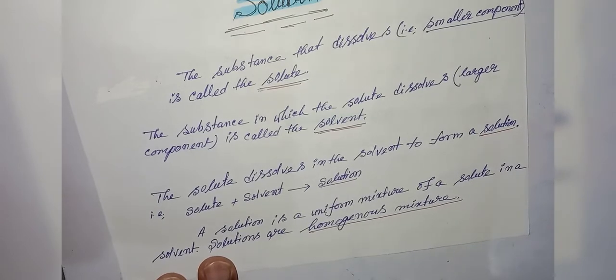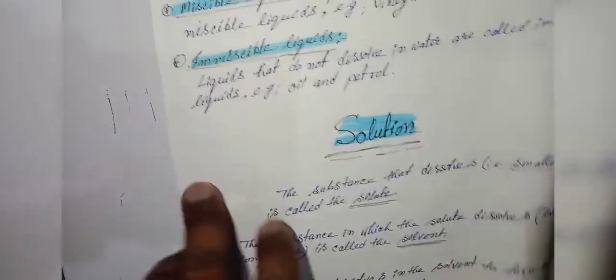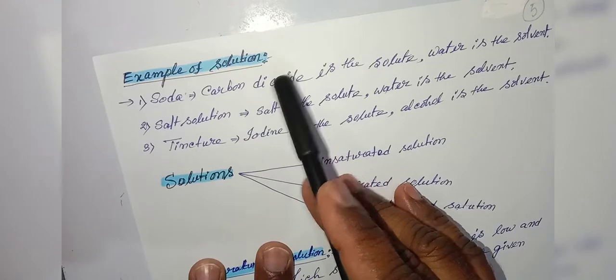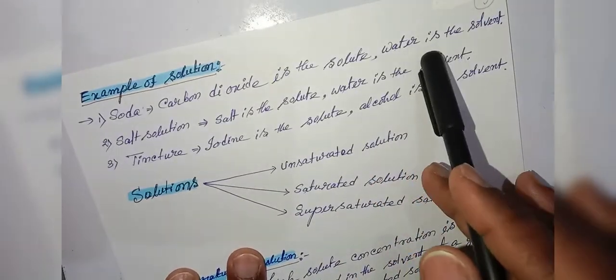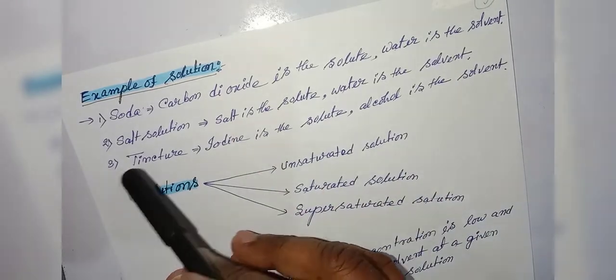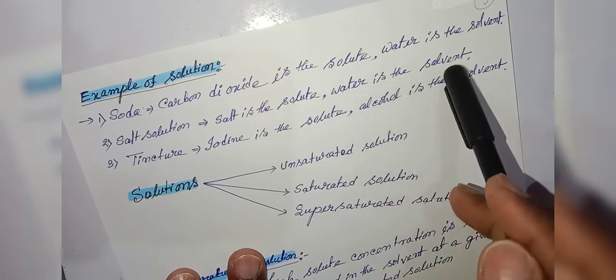The solute dissolves in the solvent to form a solution: solute plus solvent forms a solution. A solution is a uniform mixture of a solute and a solvent. Solutions are homogeneous mixtures. Examples of solutions: soda — carbon dioxide is the solute, water is the solvent; salt solution — salt is the solute, water is the solvent.